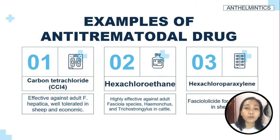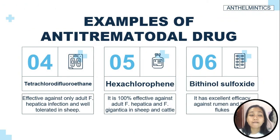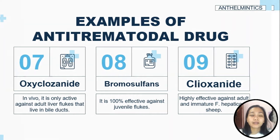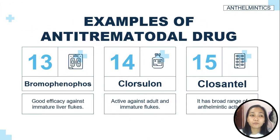In this slide, I'm going to present examples of anti-trematodal drugs. Number one is carbon tetrachloride. Two, hexachloroethane. Three, hexachloroparaxylene. Four is tetrachlorodifluoroethane. Five, hexachlorophene. Six, bithionol sulfoxide. Seven, oxyclozanide. Eight, bromosulfans. Nine, clioxanide. Ten, niclofolan. Eleven, nitroxinil. Twelve, rafoxanide. Thirteen, bromophenophos. Fourteen, clorsulon. And lastly, fifteen, closantel.